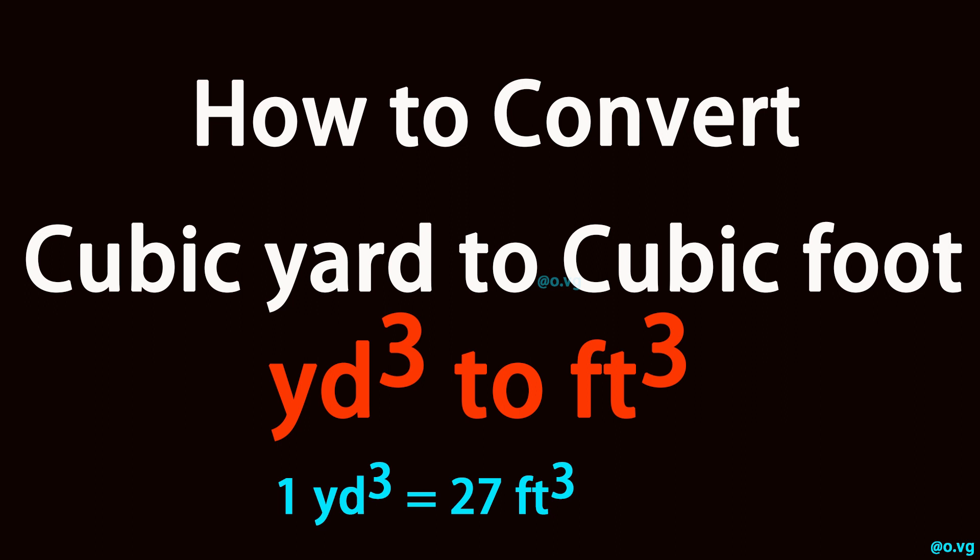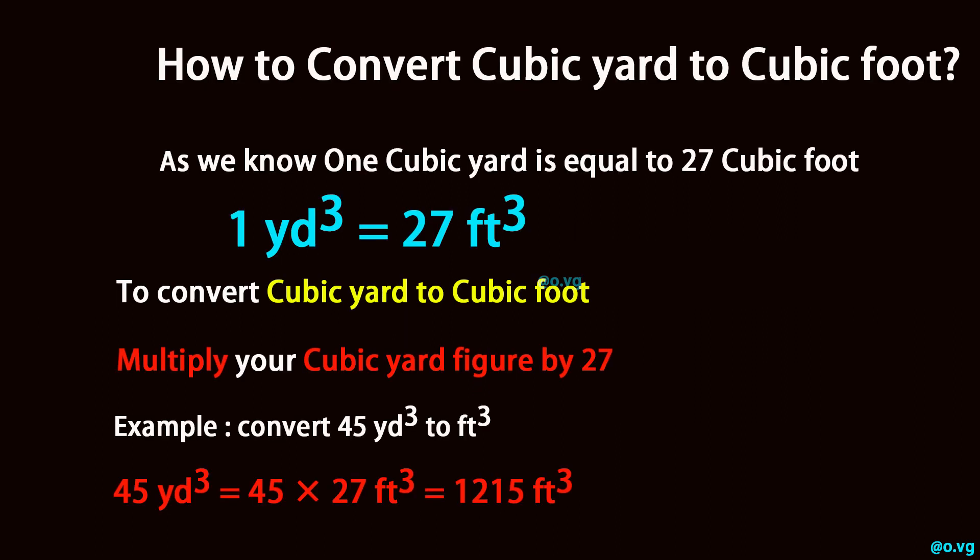How to convert cubic yard to cubic foot. As we know, one cubic yard is equal to 27 cubic feet: 1 yd³ = 27 ft³. To convert cubic yards to cubic feet, multiply your cubic yard figure by 27.